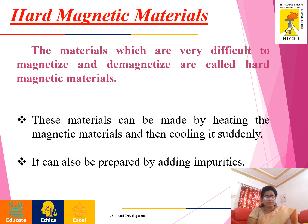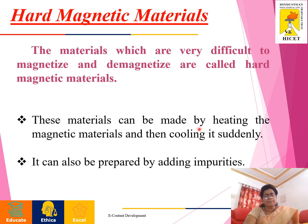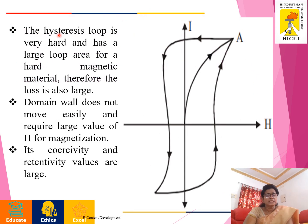First we have to see what are hard magnetic materials. The materials which are very difficult to magnetize and demagnetize are called hard magnetic materials. These materials can be made by heating the magnetic materials and then cooling it suddenly. They can also be prepared by adding impurities. The hysteresis loop is very broad and has a large loop area for a hard magnetic material.